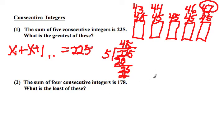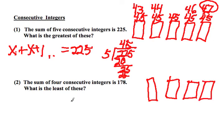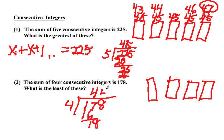Now, what if there are four consecutive integers? In this case, they sum to 178. Okay, well, what if they were all equal? 178 divided by 4. 4 fours are 16, 2, 44.5.